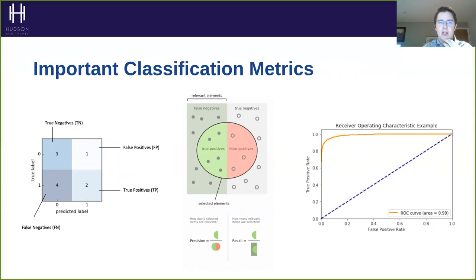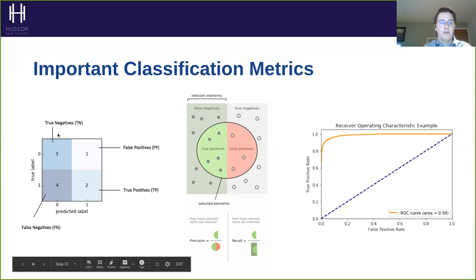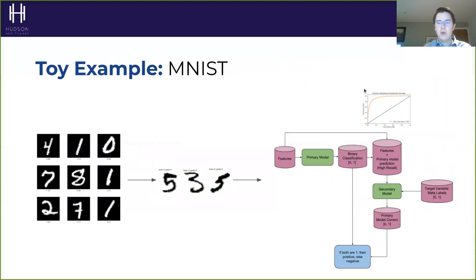There are three important metrics to understand. Since this is a recording you'll be able to revisit this lecture. The main classification metrics you'll need are: the confusion matrix, and you need to understand precision and recall and the relationship between true negatives, true positives, false positives, and false negatives. Then there's the receiving operating characteristic — the ROC curve — and how it works.